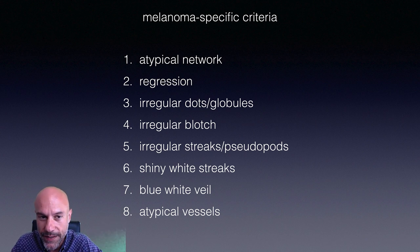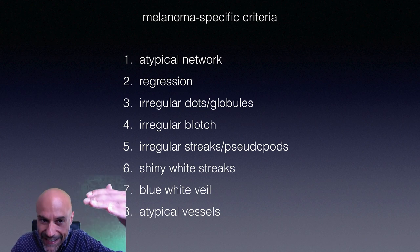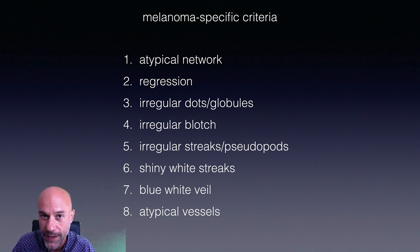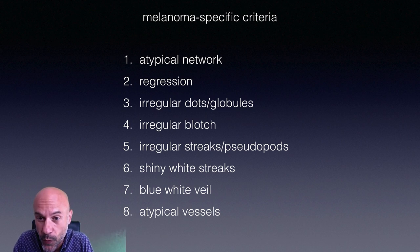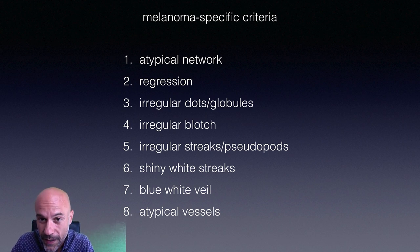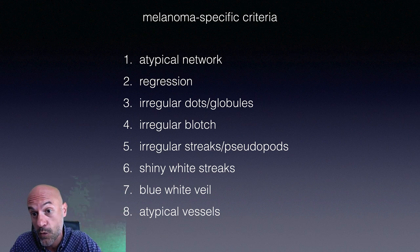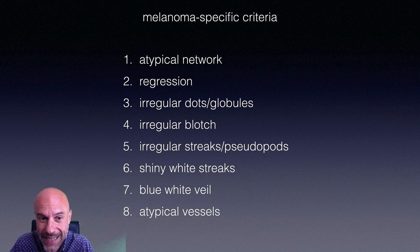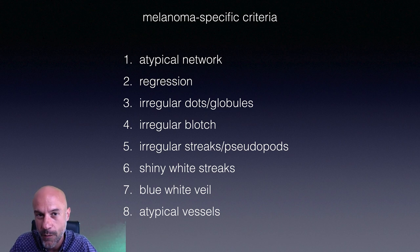In addition to asymmetry, there is a list of structures that today we know pretty well are strongly associated with melanoma. When we see them present in a lesion — each one of them, or more than one — this is a strong prediction of melanoma.